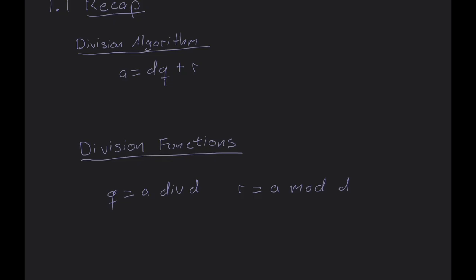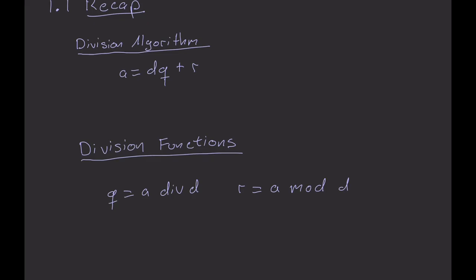To begin, remember the division algorithm, which is no algorithm because it does not take input and give output, but we call it that. The division algorithm is composed of four elements: a, which is the dividend; d, which is the divisor; q, the quotient; and r, the remainder.